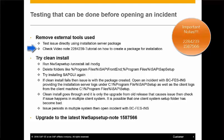Check video note 2284239 for a complete tutorial on how to create a test package. Try a clean install on the client system. If the clean install fails, then the issue is with the package created — open an incident with bcfesins providing the necessary logs. If the clean install goes through and it is only the upgrade from the old release that causes issues, then check if the installation fails on multiple client systems. If the issue persists on multiple client systems, open an incident with bcfesins.